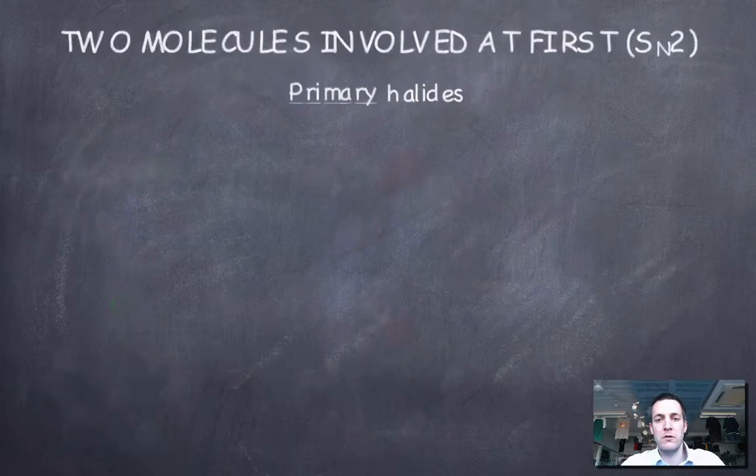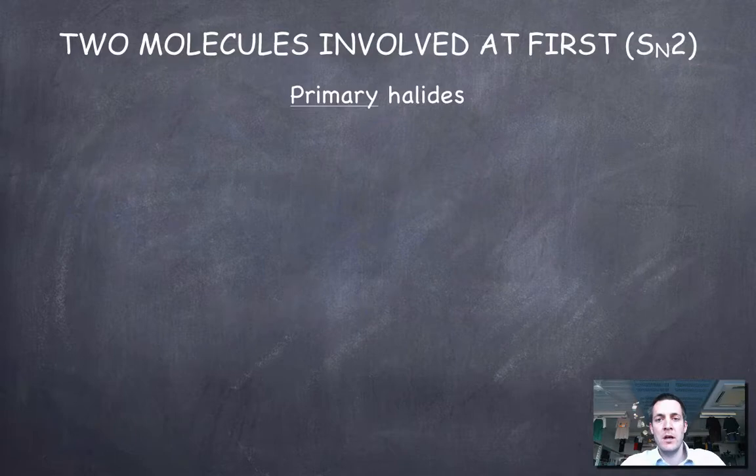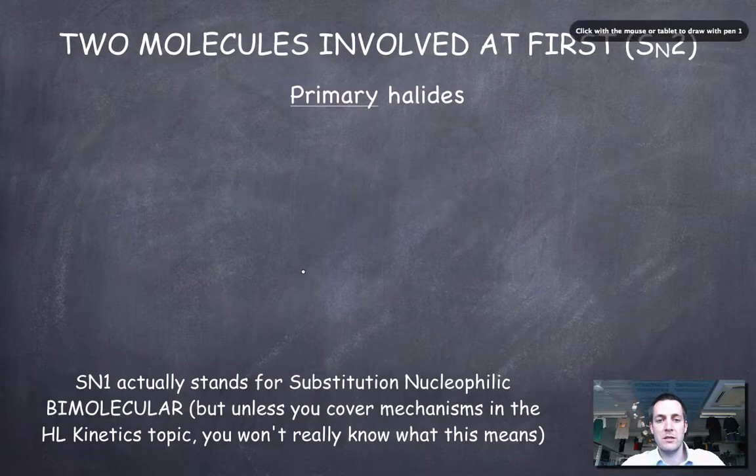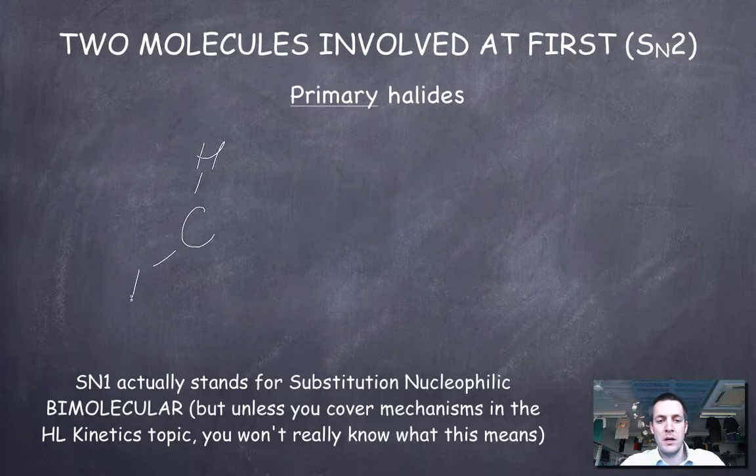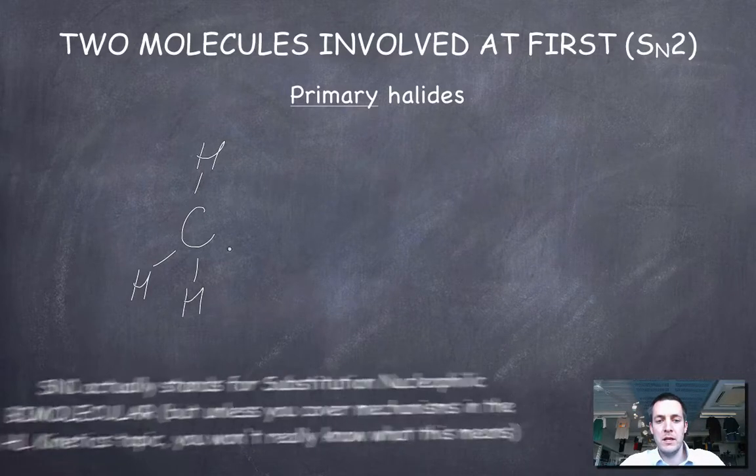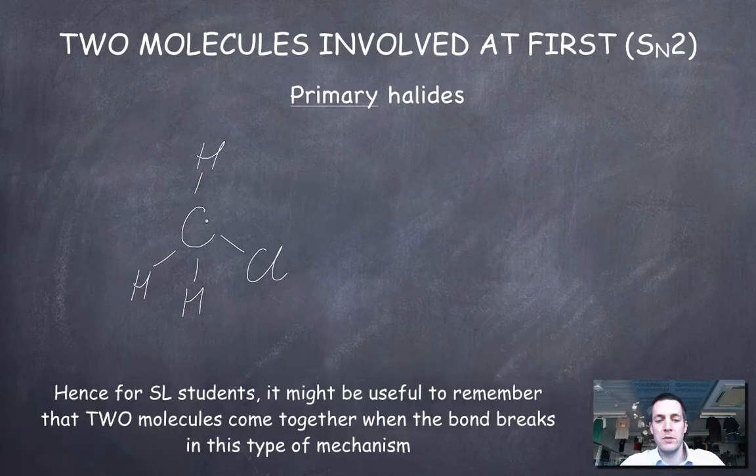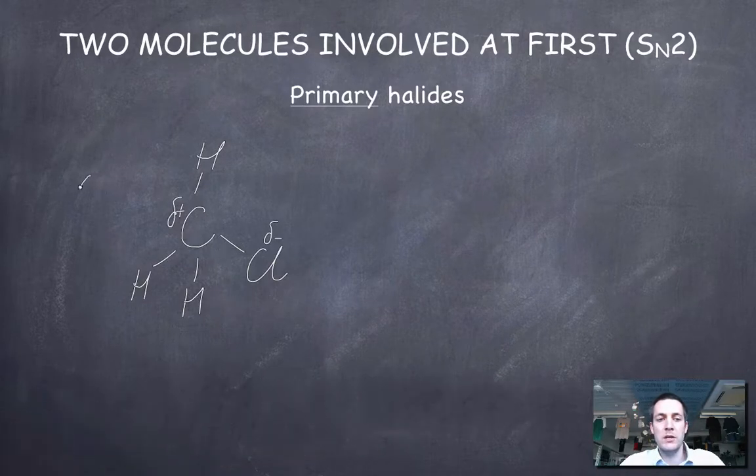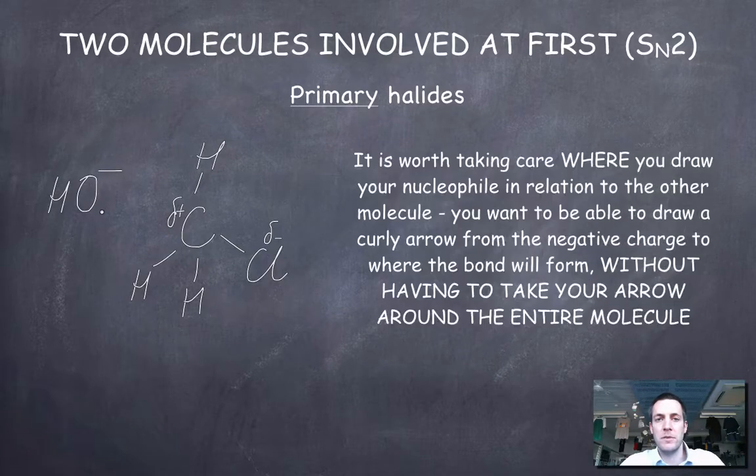So let's start off with the first kind of story, and this is called an SN2 mechanism. Now SN2 mechanisms happen with primary halides. So let's draw ourselves a primary halide, and remember that in a primary halide like chloromethane, we've got a slightly positive carbon atom because the chlorine pulled away the electrons from it. We need a nucleophile here like a hydroxide ion, and remember this negative charge basically represents a pair of electrons.